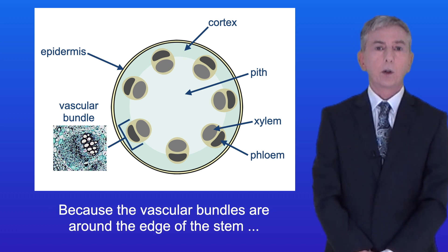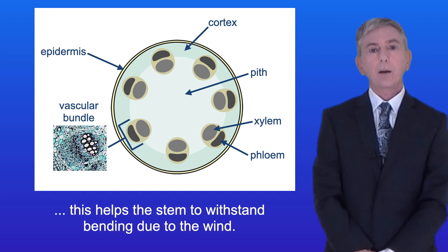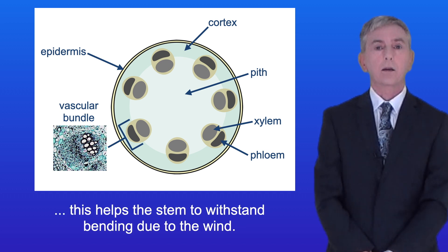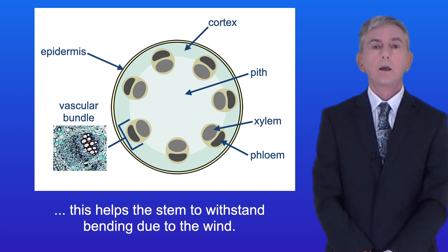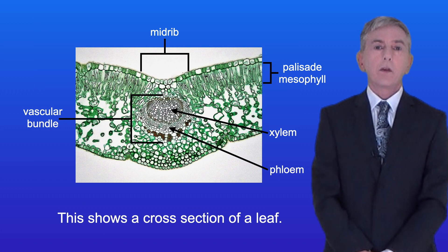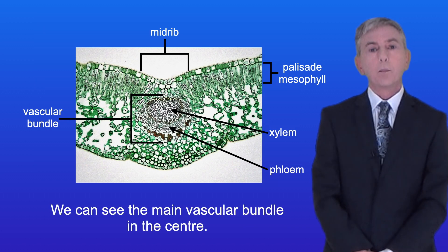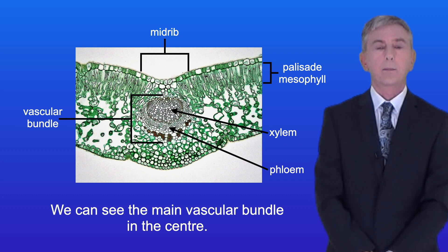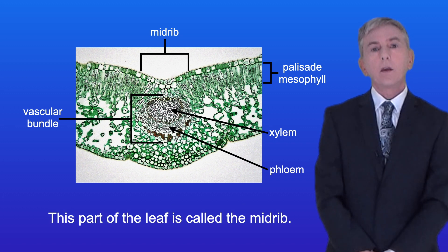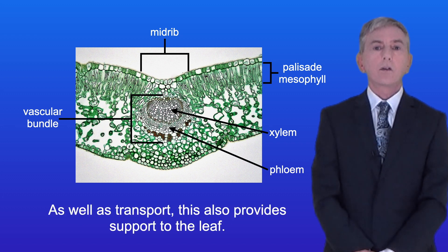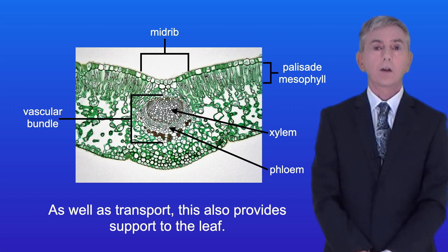Because the vascular bundles are around the edge of the stem, this helps the stem to withstand bending due to the wind. This shows a cross section of a leaf and we can see the main vascular bundle in the centre. This part of the leaf is called the midrib and as well as transport, this also provides support to the leaf.